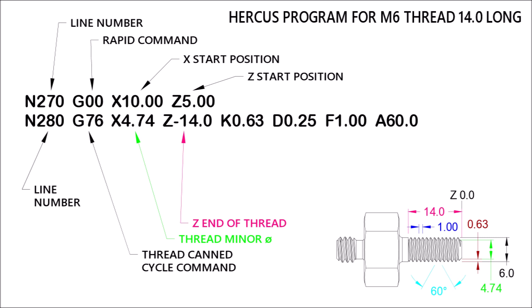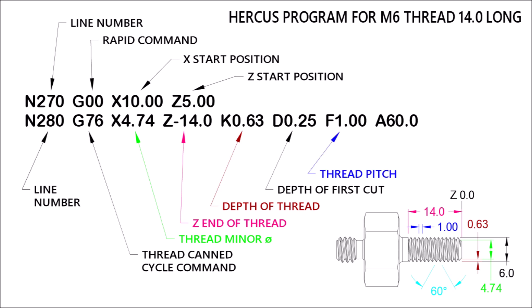The depth of thread, the Z minus 14 is the end of the thread, there's the depth of the thread, and the depth of the first cut — which as I said allows the software to work out how many cuts it'll take. Then there's the pitch of the thread and then there's the angle of the thread, which is a bit like moving your compound slide on the manual lathe.